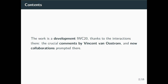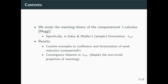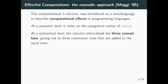The topic of this talk is about the rewriting theory of the computational calculus — specifically the one introduced by Moggi, and the Sabry-Wadler formulation, which is simpler. This calculus is named lambda ML star. The results are divided into a first negative part, presenting counter-examples to confluence and factorization of weak reduction, which is quite unexpected, and a second positive part where we prove a convergence theorem in lambda ML star.